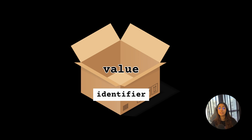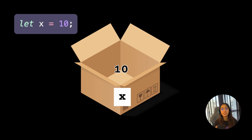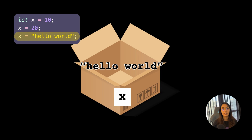For example, if you create let x = 10, then x is the identifier for this variable. Using this x identifier, you can access the value stored within this variable, which is 10. Since the let keyword allows you to reassign a value throughout its lifetime, you can change the value stored in this box. For example, let x = 10, then x = 20, then x = 'hello world'.